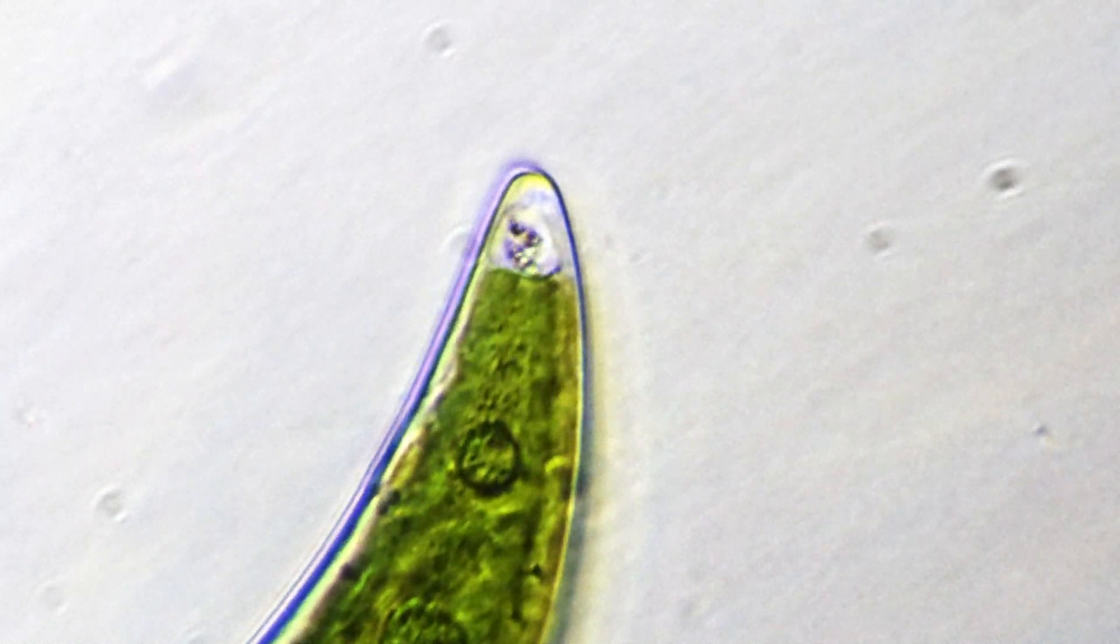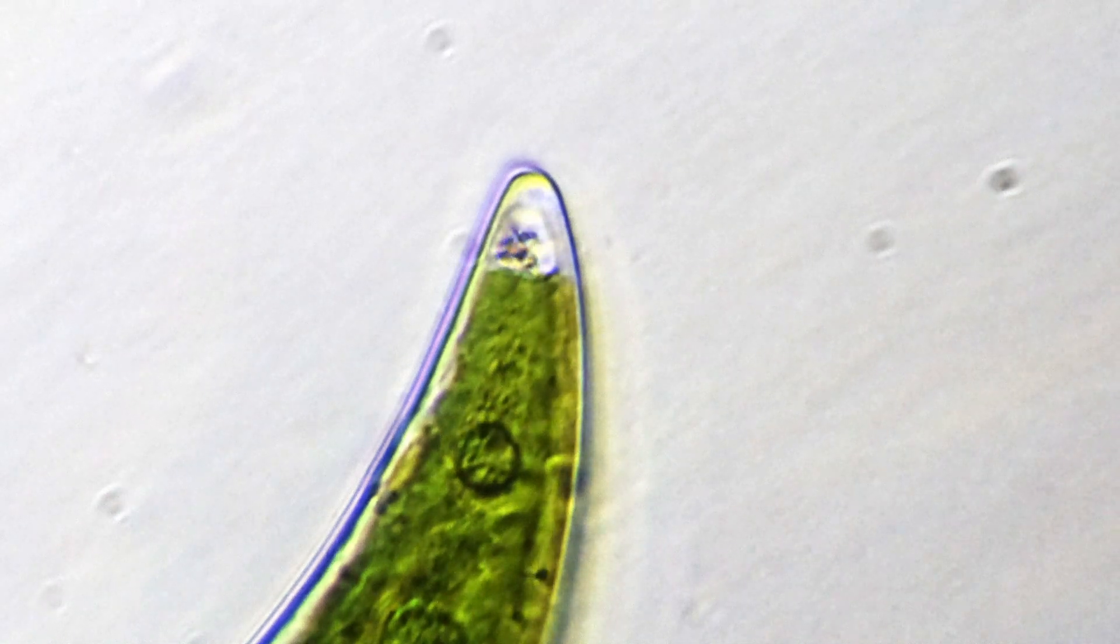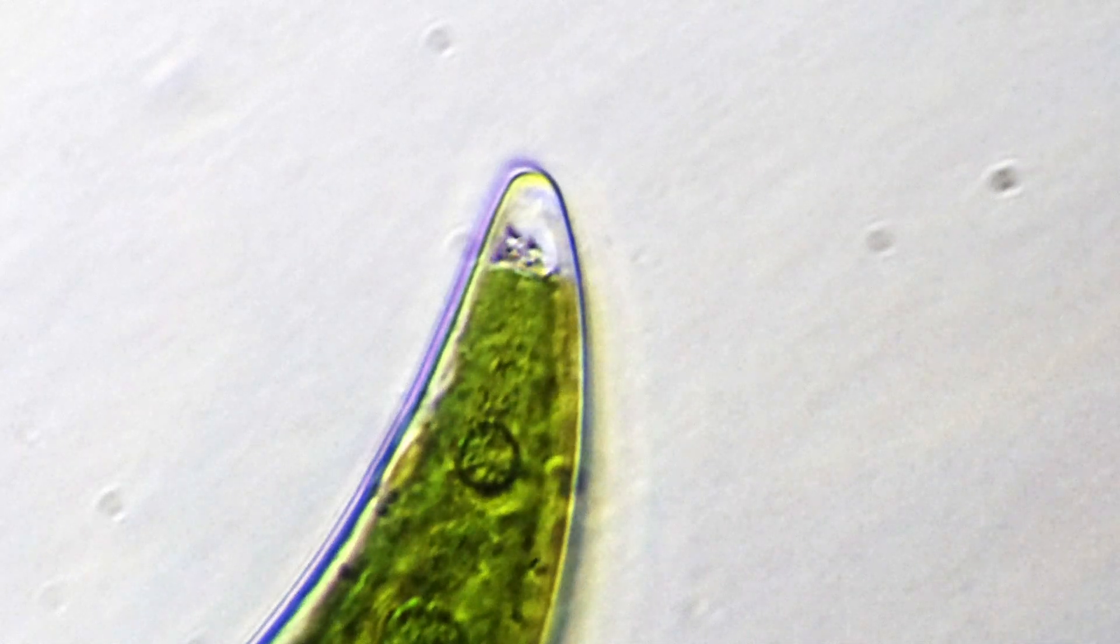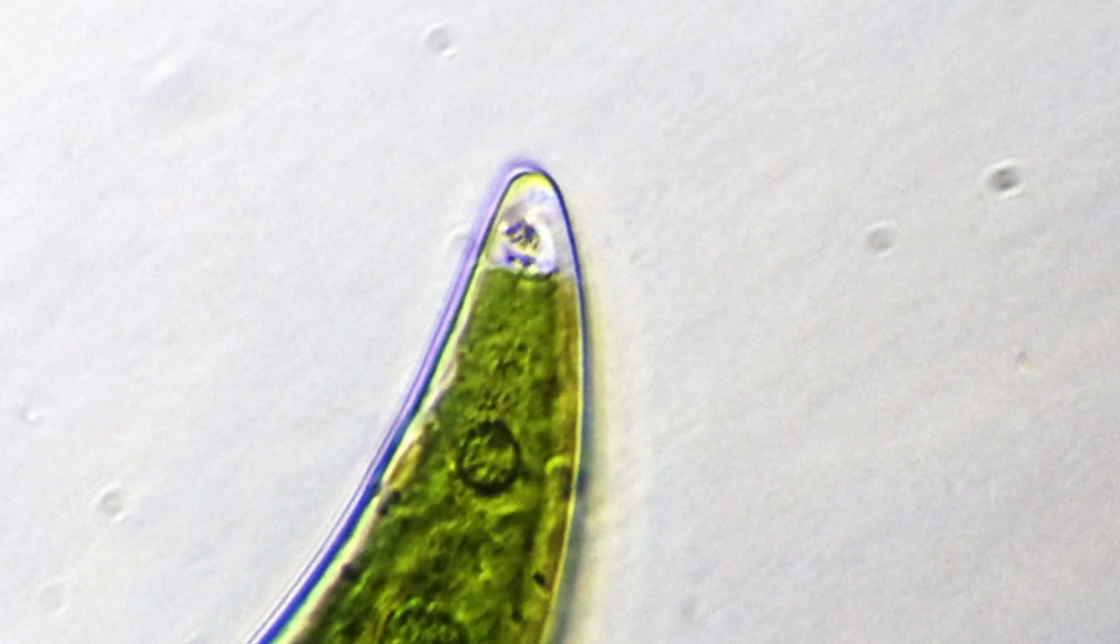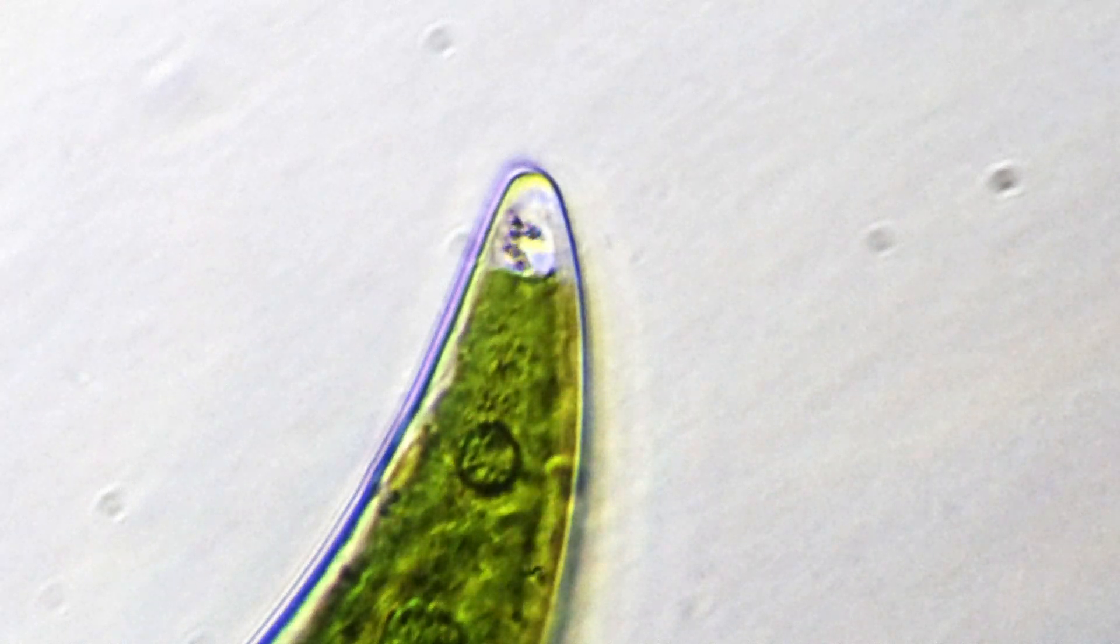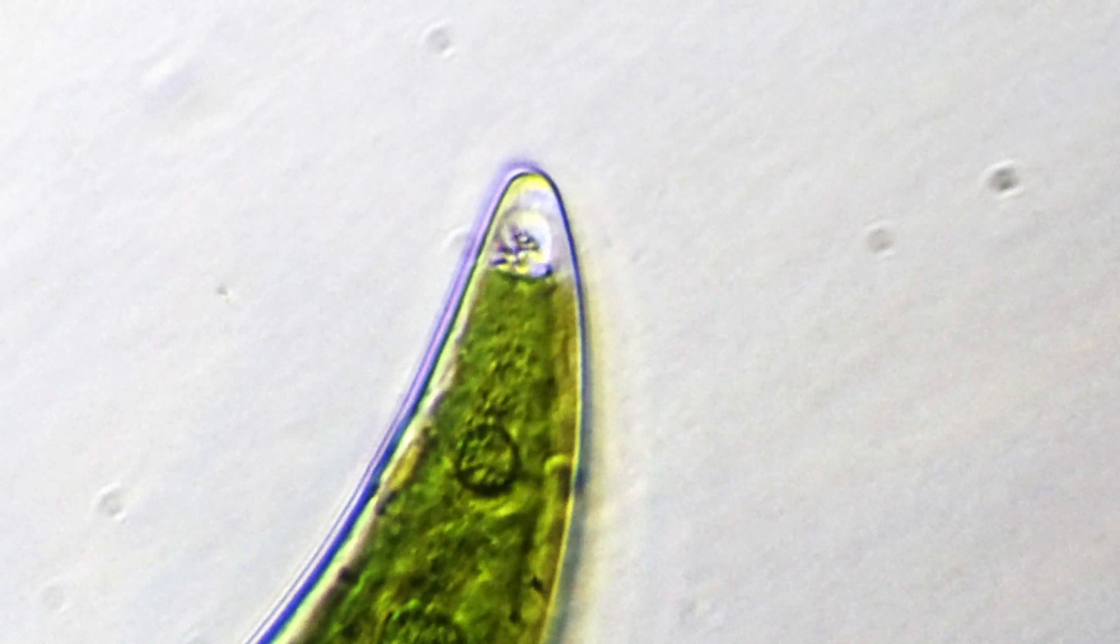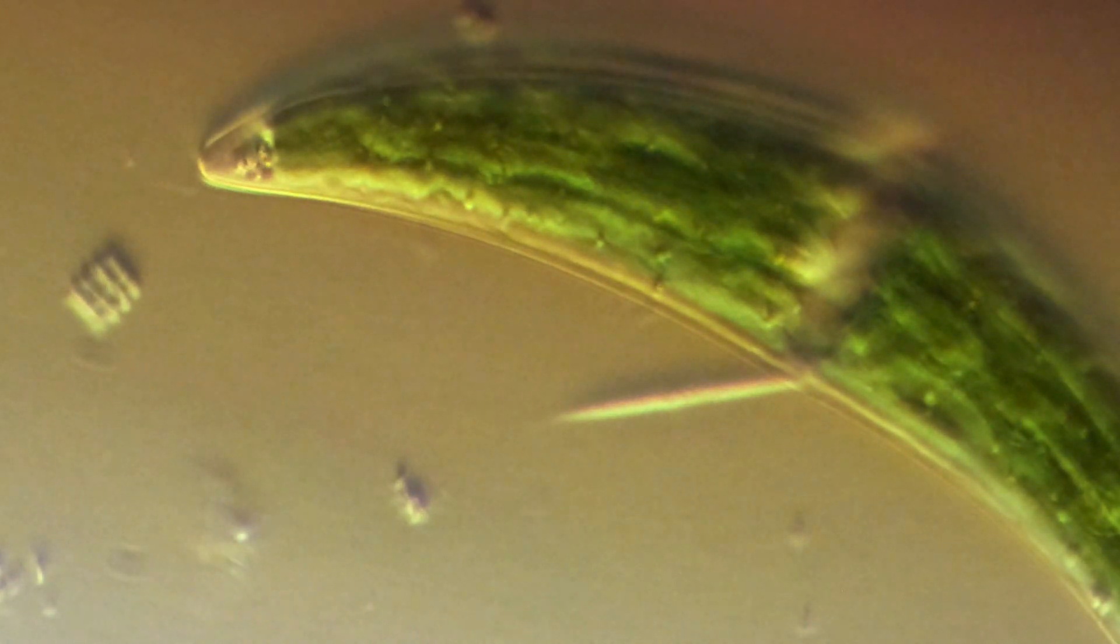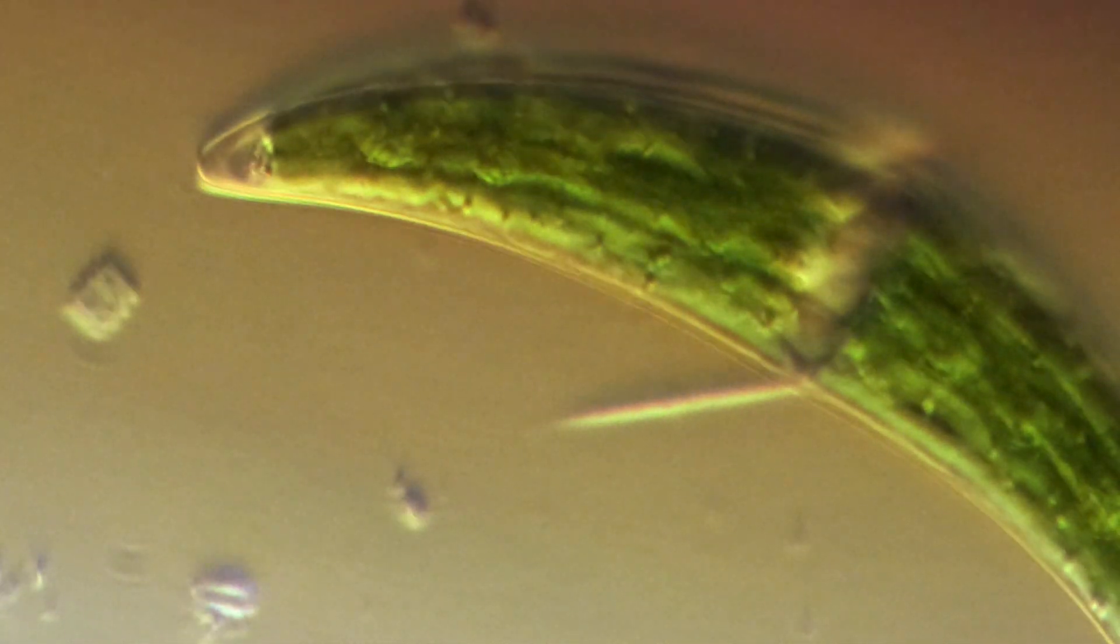These little crystals bounce about endlessly within their vacuoles, always in motion through a phenomenon called Brownian motion, a topic we will look at in another video. The crystals themselves are made of barium or calcium sulfate. And here's the thing: every Closterium has them, but to this day no one knows what they do.